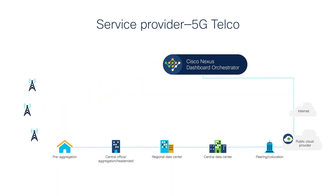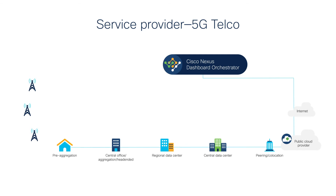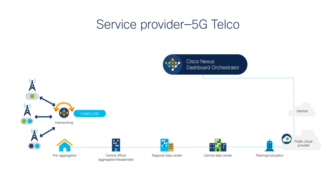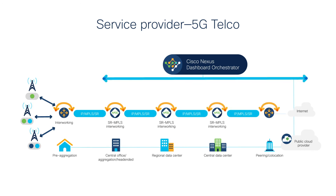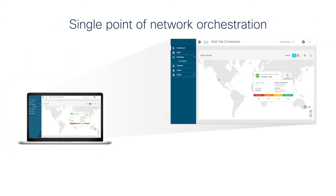For 5G Telco, it is the central orchestrator for all data center cloud sites, including central, regional, and edge data centers. Our latest 3.0 release also enables consistent segment routing multi-protocol label switching handoff transport, and application slice interworking between 5G Telco cloud sites and the service provider's transport backbone. A single template can support dozens of switch fabrics. The Cisco Nexus Dashboard Orchestrator can also provide cloud connectivity to a 5G service provider to simplify complex, multi-tiered processes. A single point of network orchestration and automation provides all the centralized visibility and control you need.